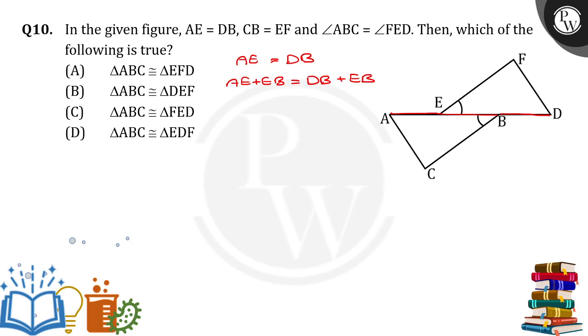I am adding EB on both sides. So now check, AE plus EB will give us AB and in the same way DB plus EB will give us DE. So this is what we got.